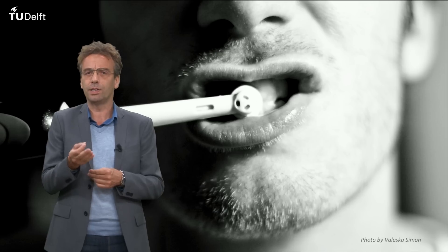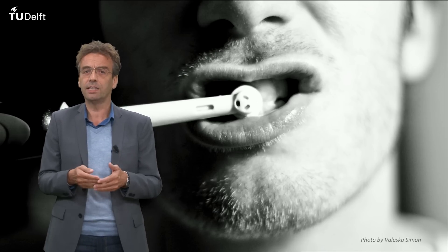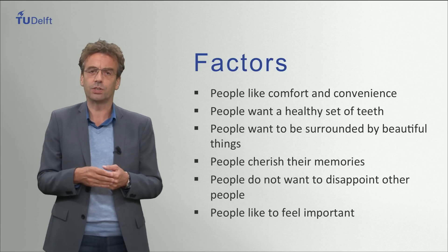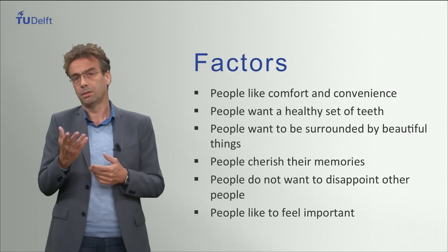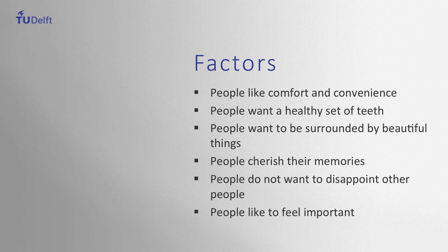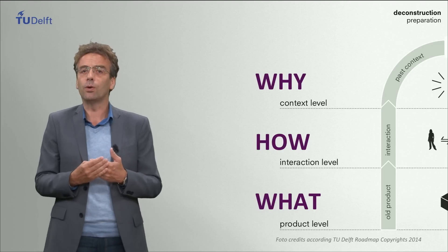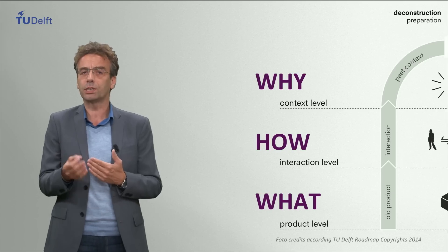To understand why things are the way they are, and why we interact with them the way we do, we need to look at the third level — the level where all reasons underlying a design come together. For the electric toothbrush, people like comfort and convenience, or people want a healthy set of teeth. For nails and the hammer, people want to be surrounded by beautiful things, or people cherish their memories. And for the mobile phone, people do not want to disappoint other people, people like to feel important. At this third level, which we call the context level, we look at all the reasons and considerations why things are the way they are, and what makes products meaningful to people.